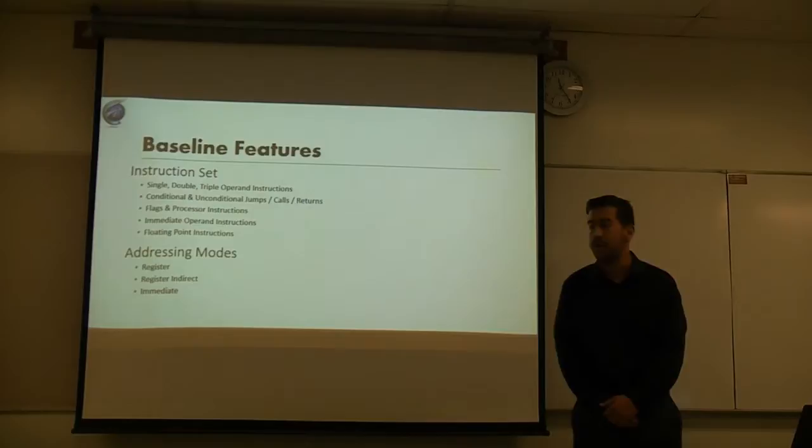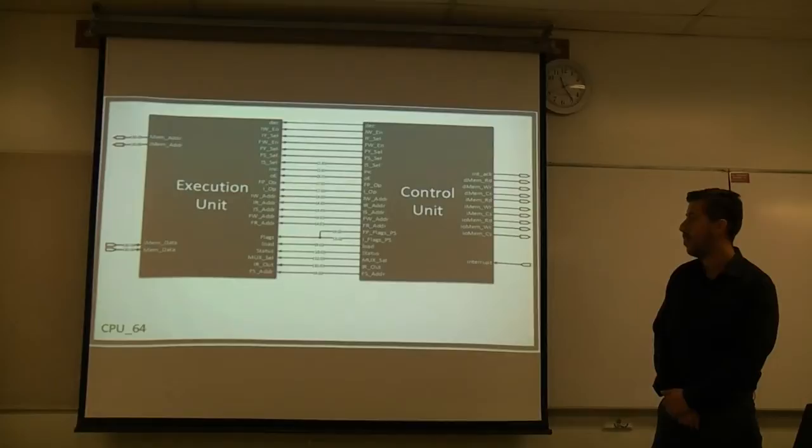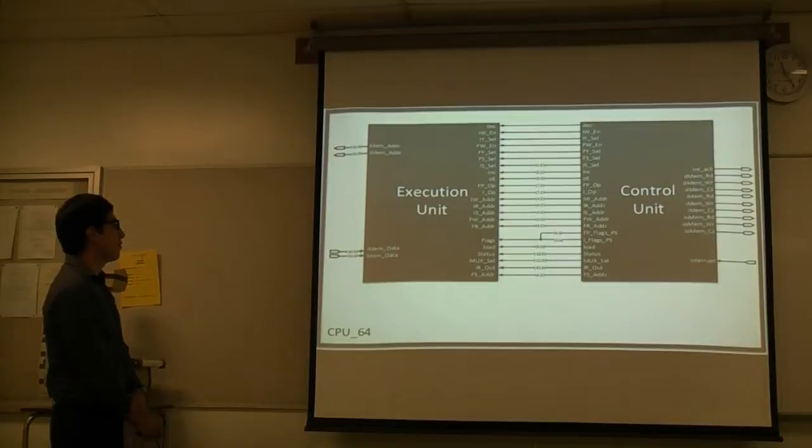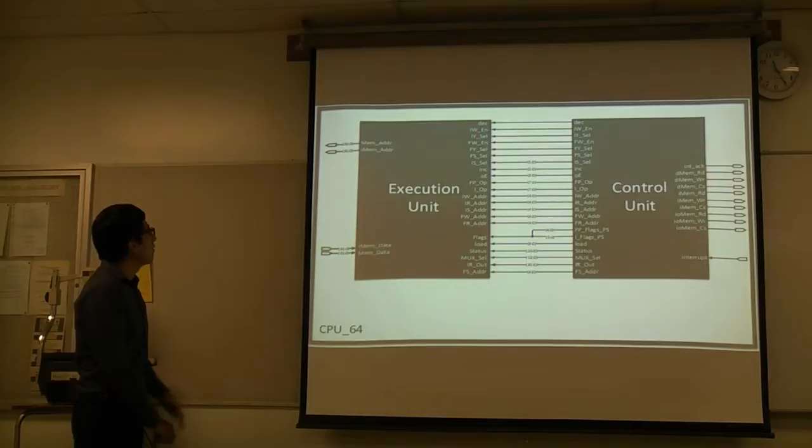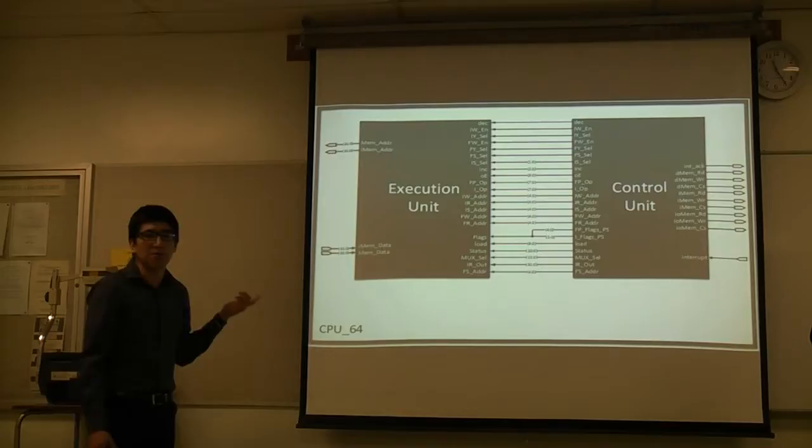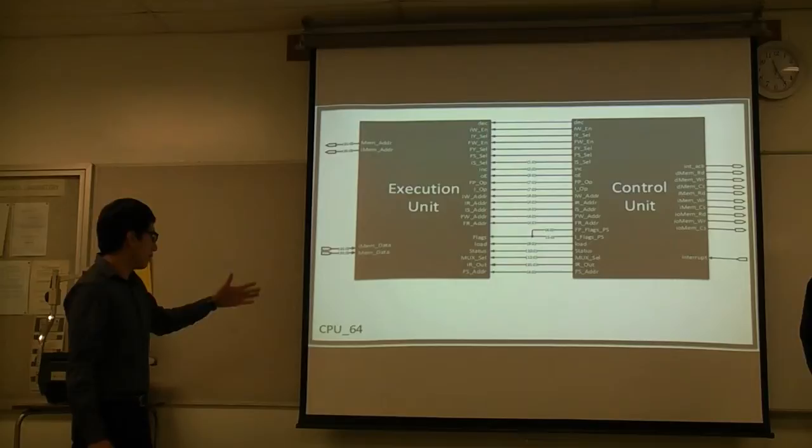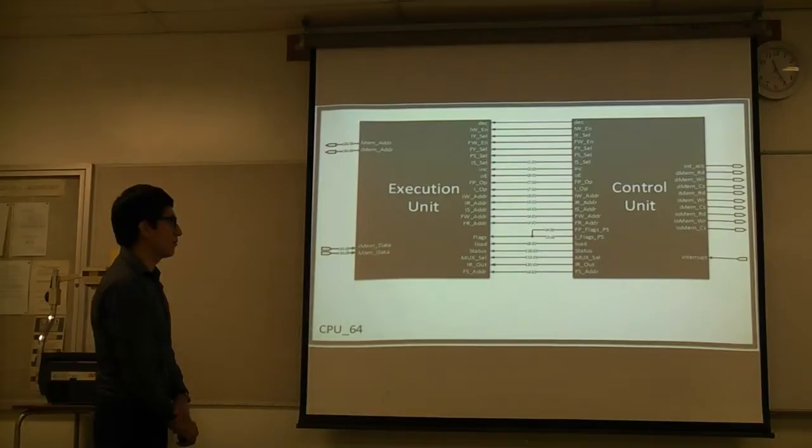This is the top level block diagram for our CPU. On the left, we have the execution unit, and on the right, we have the control unit, and in the middle, we have all the control signals coming from the control unit to the execution unit. On the left here, we have the address signals from the execution unit to our data memory, our input, output memory, and the instruction memory. On the bottom here, we have the data signals coming from the same memory modules. On the right, we have all of the memory control signals, the shift, select, read, write, as well as the interrupt and the interrupt acknowledge.